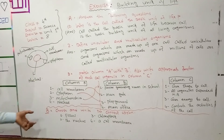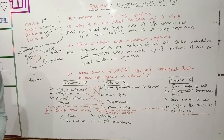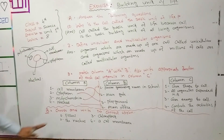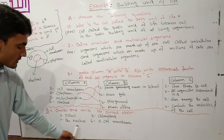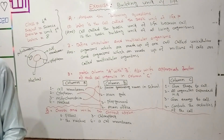Question number 3B: choose and write the correct option. First number: cells similar in structure and function combined together form — tissues. Number two: cell repairing is the function of — the nucleus.